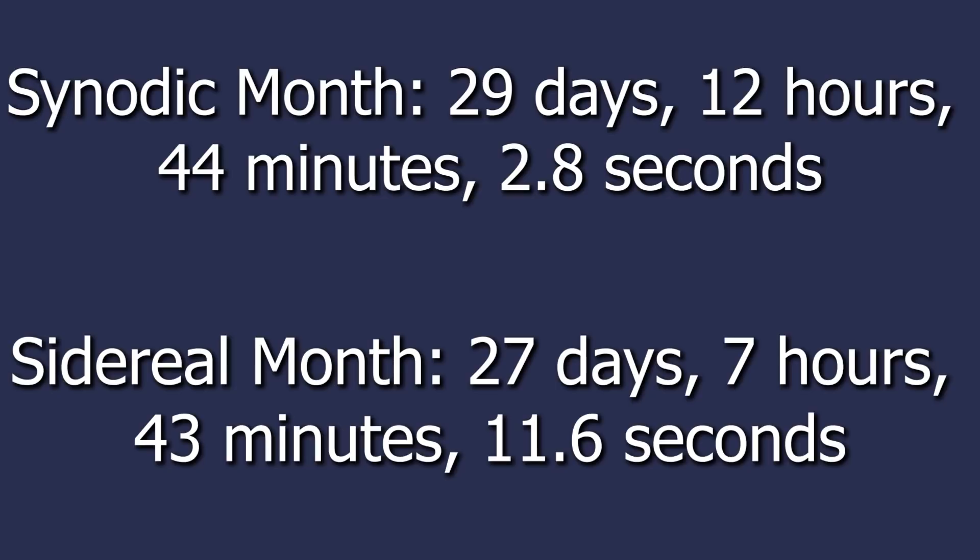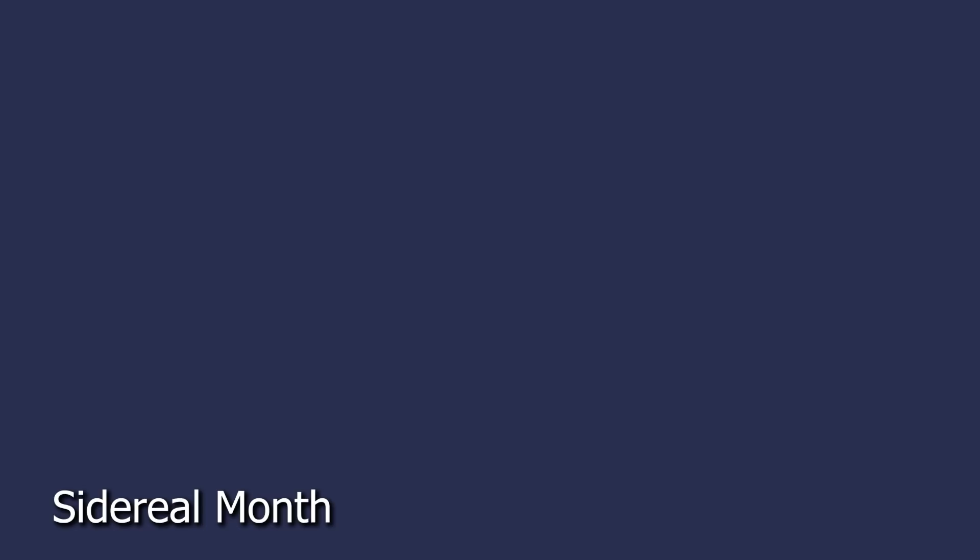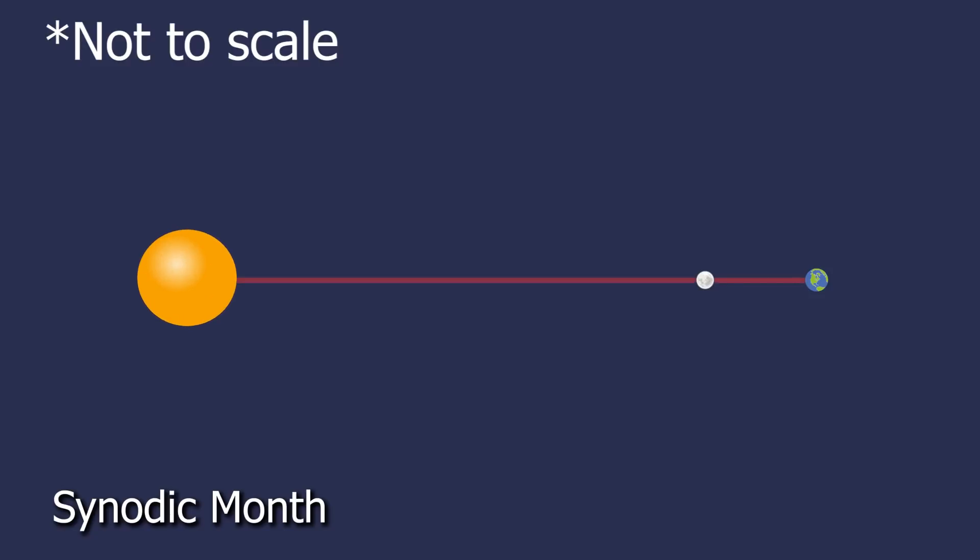Another kind of month is called a synodic month, which is how long it takes for the Sun, Earth, and Moon to return to the same alignment, or how long it takes from one full moon to get back to another full moon. This ends up taking 29 days, 12 hours, 44 minutes, and 2.8 seconds. That's two whole days longer than the sidereal month. Why is a synodic month that much longer?